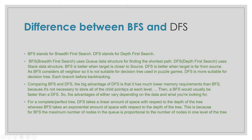Comparing BFS and DFS, the big advantage of DFS is that it has a much lower memory requirement than BFS, because it is not necessary to store all of the child pointers at each level. BFS is usually faster than DFS. For a complete perfect tree, DFS takes a linear amount of space with respect to the depth of the tree, whereas BFS takes an exponential amount of space. This is because for BFS the maximum number of nodes in the queue is proportional to the number of nodes in one level of the tree.